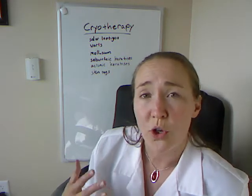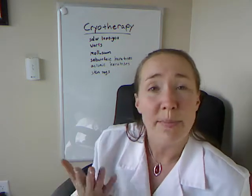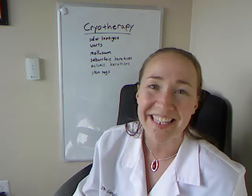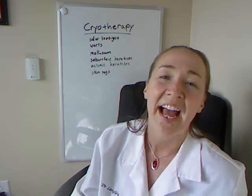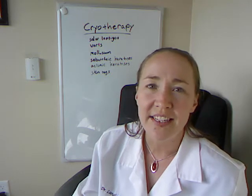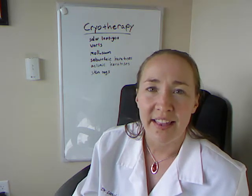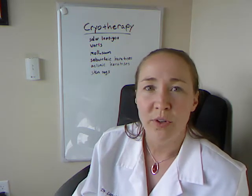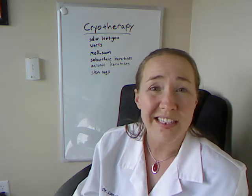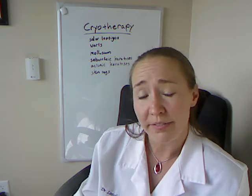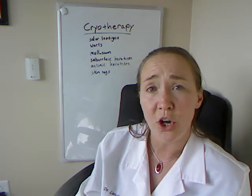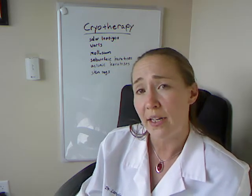Solar lentigos — also called liver spots, though solar lentigos is a more pleasant name — are dark spots on your skin that appear as you get older. They can be frozen pretty easily and gotten rid of. Sometimes it leaves a scar, but generally not.